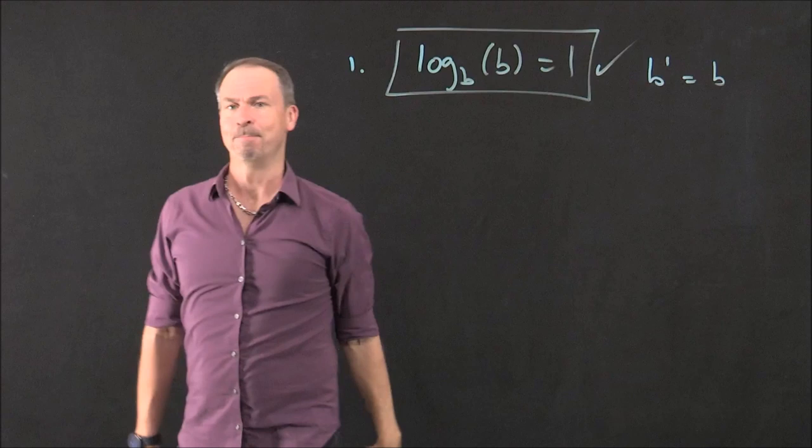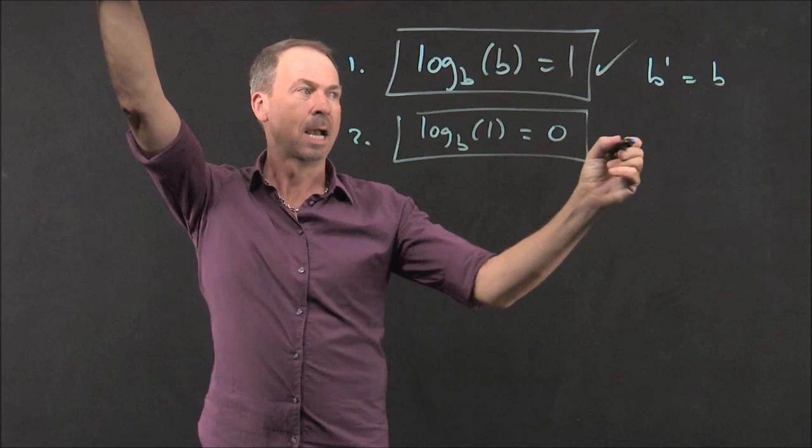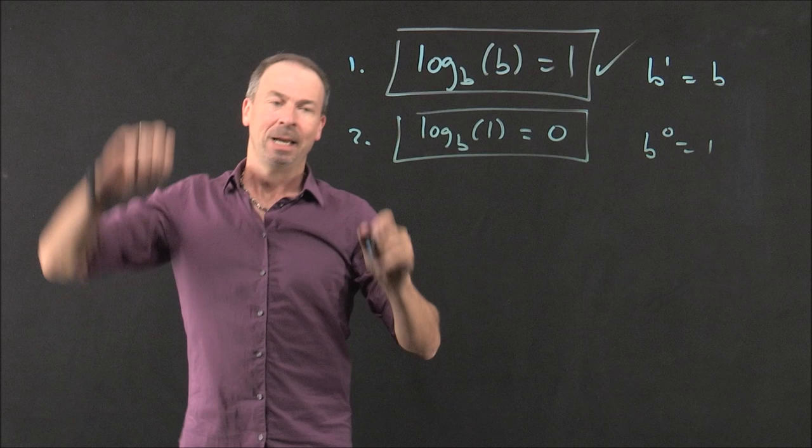Log rule number 2. Log base B of 1 is 0. What power of B gives the answer B to the 1? B to the 0 equals 1. Bingo. Log rule there.